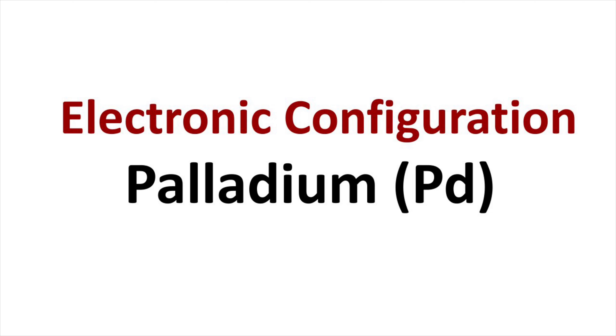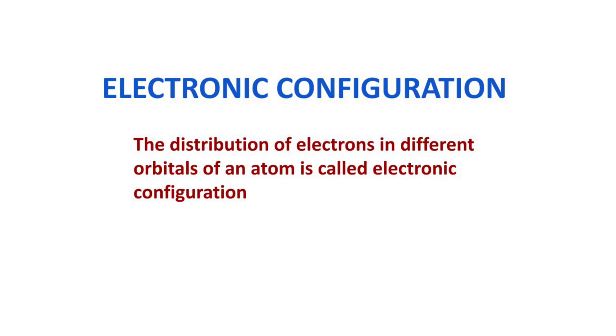Welcome to Aurora Chemistry for Everyone. In this video we will analyze how to write the electronic configuration of Palladium. The distribution of electrons in different orbitals of an atom is called electronic configuration. To write electronic configuration we should know the atomic number.